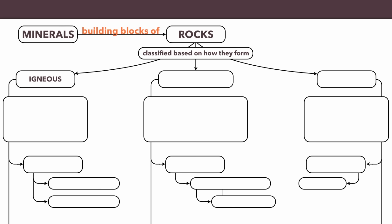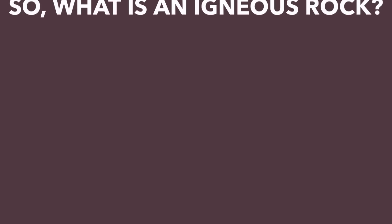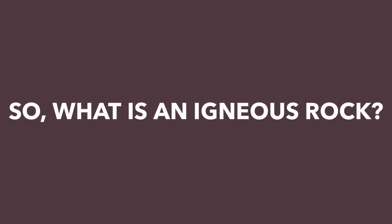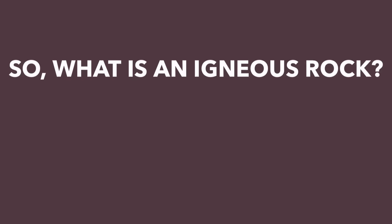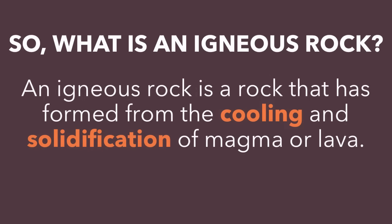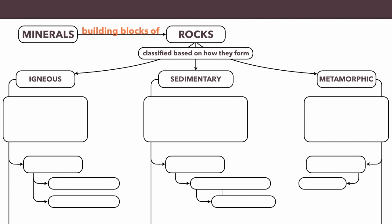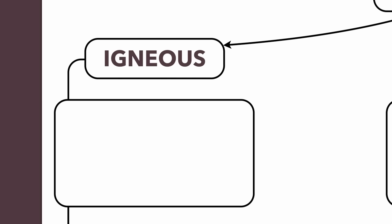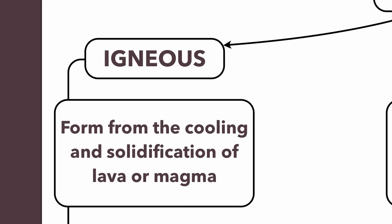Those three categories are igneous rocks, which we'll talk about today, sedimentary rocks, and metamorphic rocks. So let's take a look at igneous rocks. An igneous rock is a rock that formed from the cooling and solidification of magma or lava. When molten rock cools down and essentially turns into a solid, that is what an igneous rock is formed from.